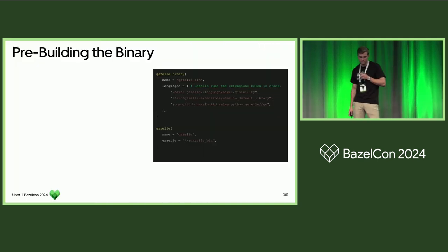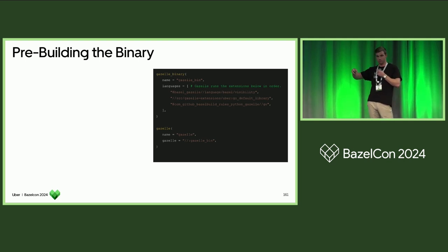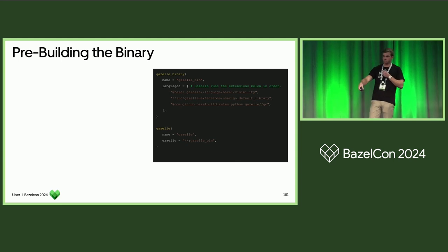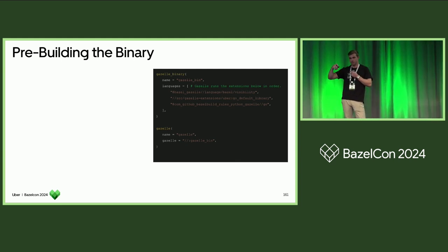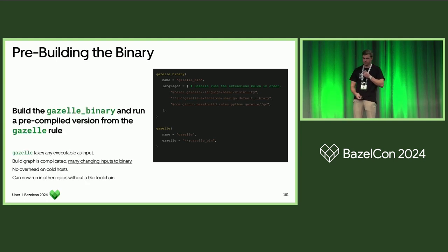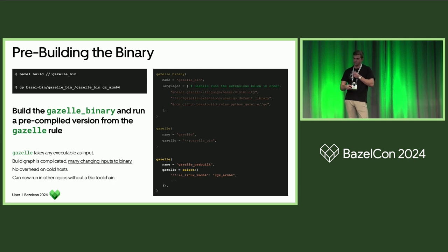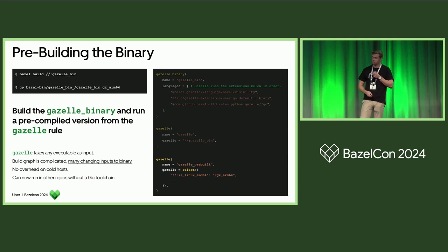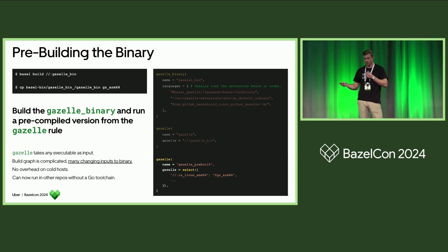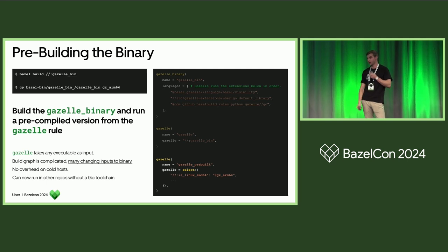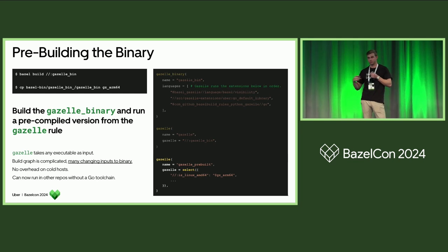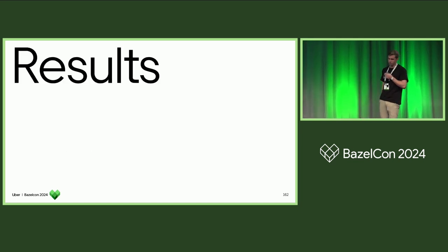Lastly, we pre-built the binary. Gazelle has two rules: Gazelle binary and Gazelle rule. The Gazelle rule can take any executable rule as an input — it's usually the Gazelle binary. But we can pre-build something and add a pre-built binary. In this case it's just a file, but it can be uploaded to Artifactory or something to automatically run your pre-built binary. This is great for cold hosts, especially in IDEs — when you first open your laptop, you don't need to build anything. It's ready to go and it runs really fast.